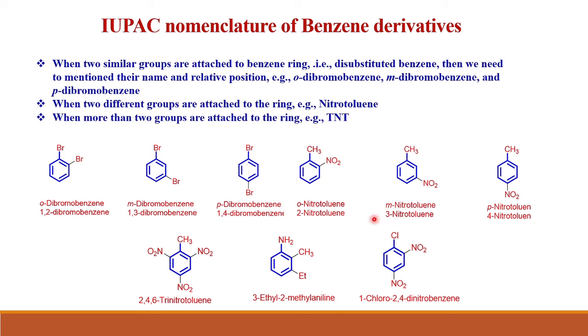When more than two groups are attached to the ring, for example TNT (trinitrotoluene), we keep toluene as the main name and specify the relative positions of the nitro groups: 2,4,6-trinitrotoluene. Another example: 3-ethyl-2-methylaniline, where aniline is the main name. Also, 1-chloro-2,4-dinitrobenzene. This is all about today's lecture. In the next lecture, we will see the preparation of benzene using common chemical methods. Thank you.